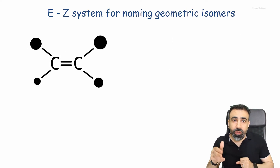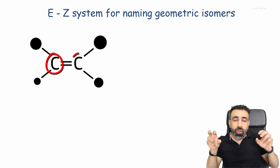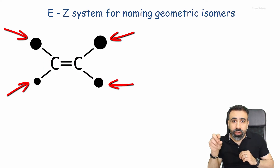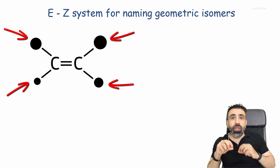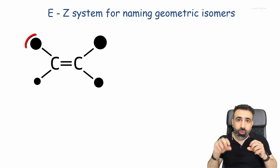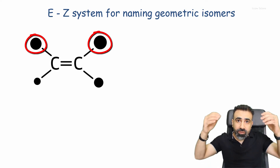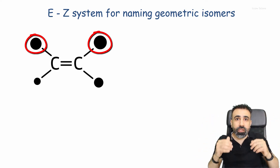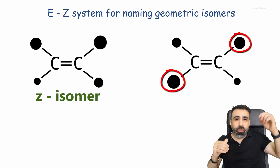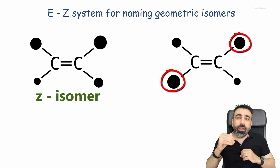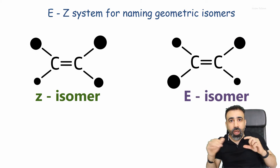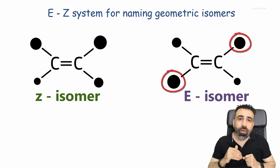To apply the EZ system, we look at both ends of the double bond and arrange the groups attached to each carbon according to their priorities. If the two groups with the higher priorities are on the same side of the double bond, the isomer is called the Z-isomer. But if they are on opposite sides, it is called the E-isomer. To memorize it, relate E to enemies — enemies are supposed to be on opposite sides.